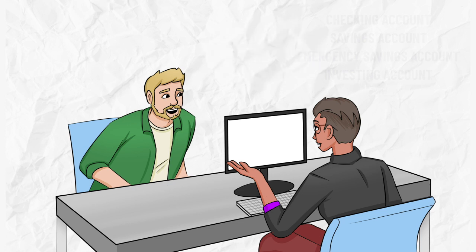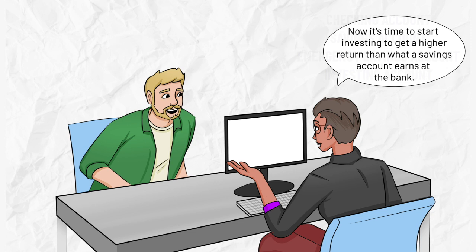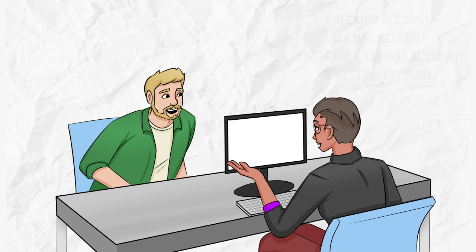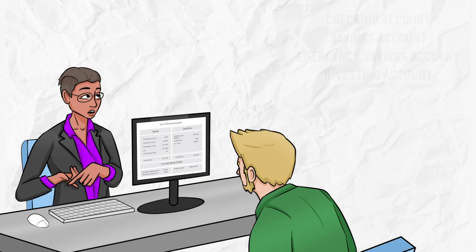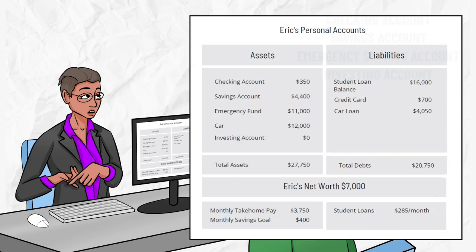His financial advisor says it's time to start investing to get a higher return than what a savings account earns at the bank. Savings accounts generally earn about two percent per year in interest. Eric has been saving four hundred dollars per month and now has almost fifteen thousand dollars in his regular savings and emergency fund accounts.